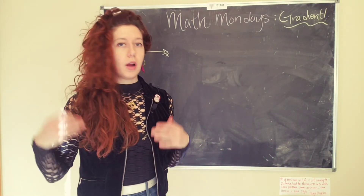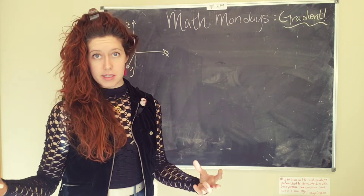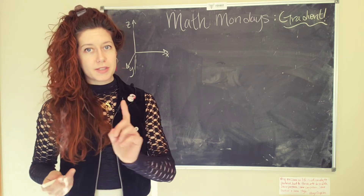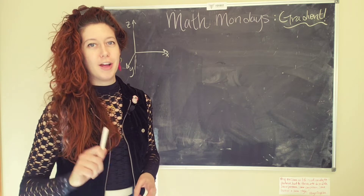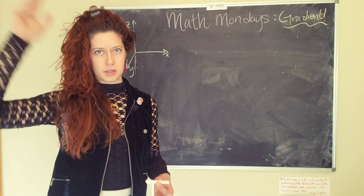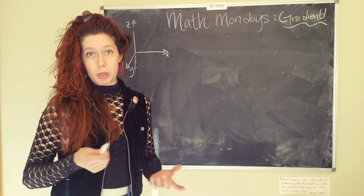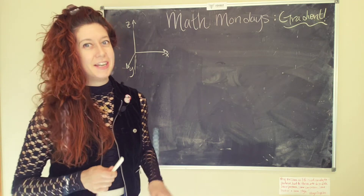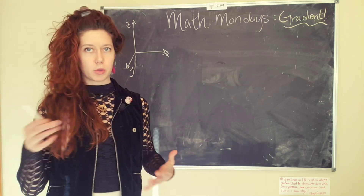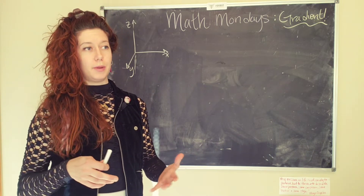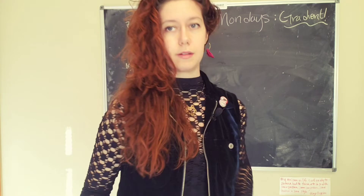Derivatives, as a quick reminder, tell us how fast a function varies in a particular direction. So let's look at temperature, because it's something we all deal with and it's very relevant to my life right now. I recently moved into a place that has three stories, and the ground floor gets real cold, the middle floor gets pretty warm, and the upper floor gets really, really hot. So the variance of temperature — how temperature changes — as I move throughout my house really depends on the direction I'm moving.